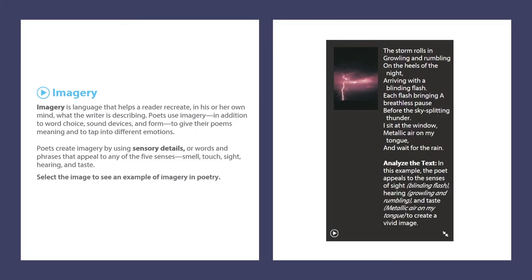Imagery is language that helps a reader recreate in their own mind what the writer is describing. Poets use imagery in addition to word choice, sound devices, and form to give their poems meaning and to tap into different emotions. Poets create imagery by using sensory details — words and phrases that appeal to any of the five senses: smell, touch, sight, hearing, and taste. In the example poem about a storm, the poet appeals to the senses of sight, hearing, and taste, using phrases like 'blinding flash' and 'metallic air on my tongue.'